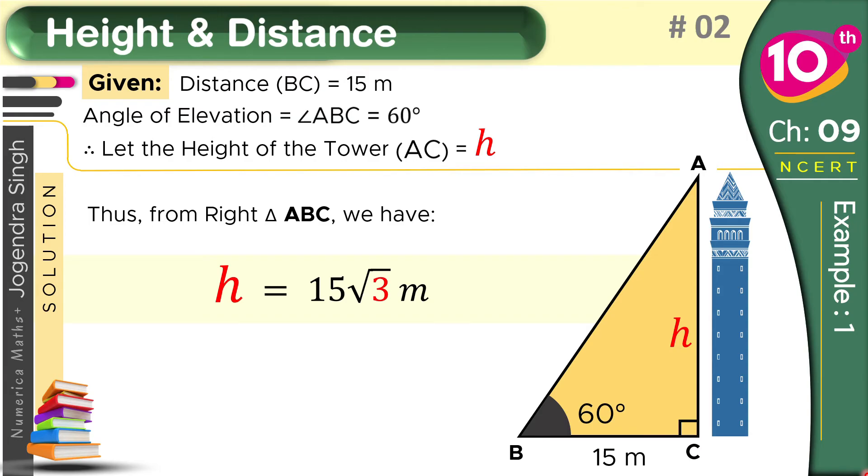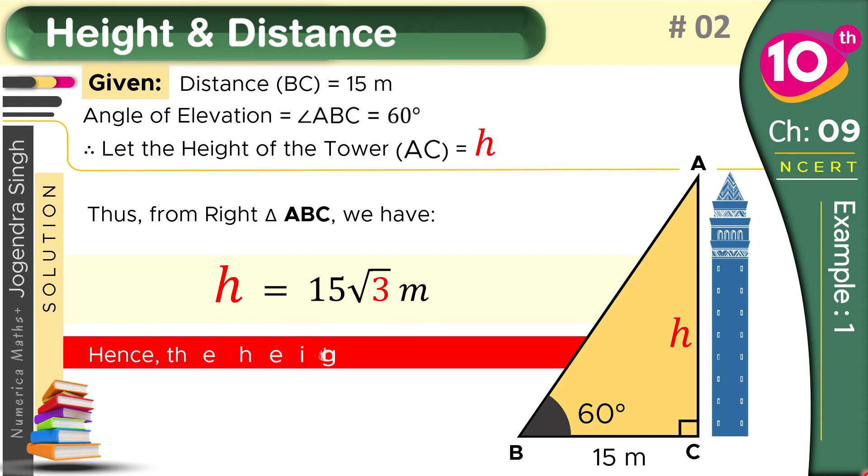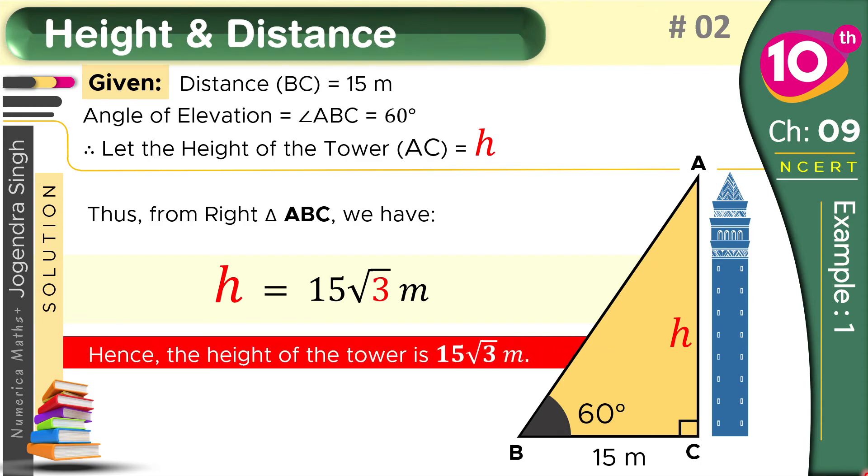Why meters? Because our base is in meters, so all lengths, whether it's the hypotenuse or this height, will all be counted in meters. So this is what we have to find. Hence, the height of the tower is 15 root 3 meters.